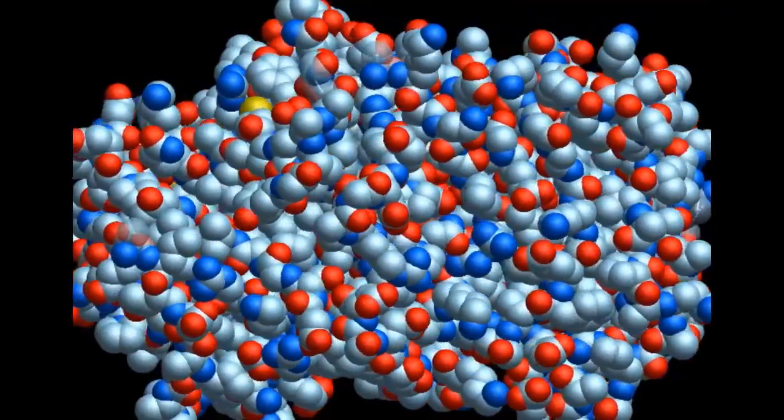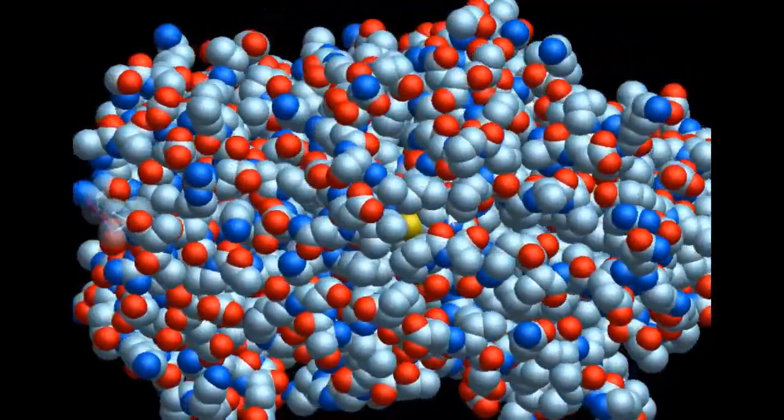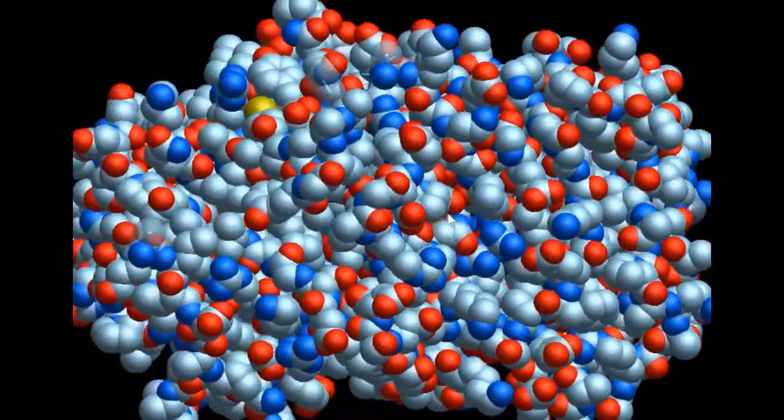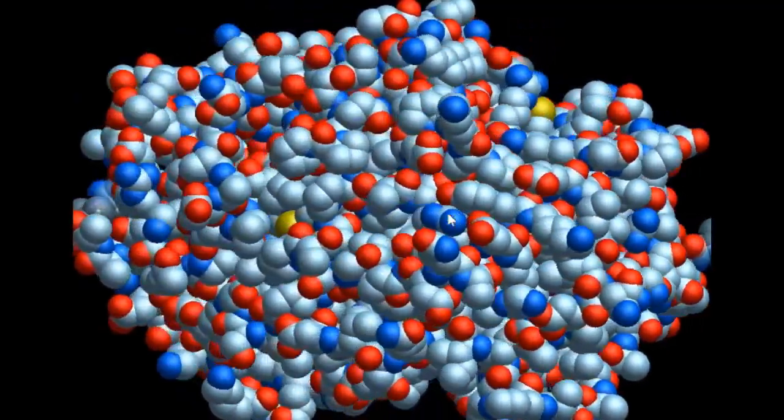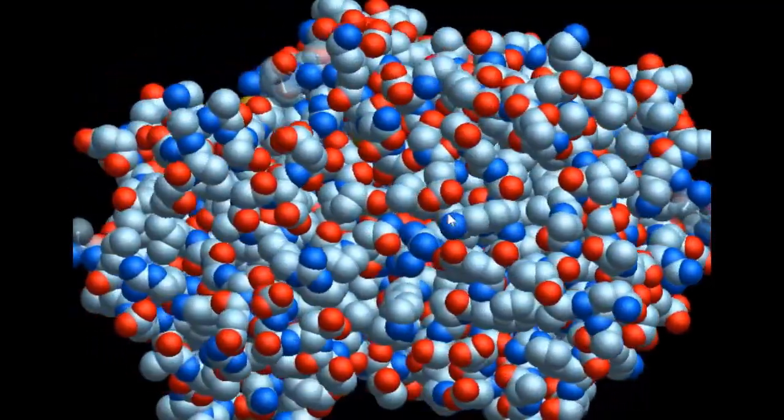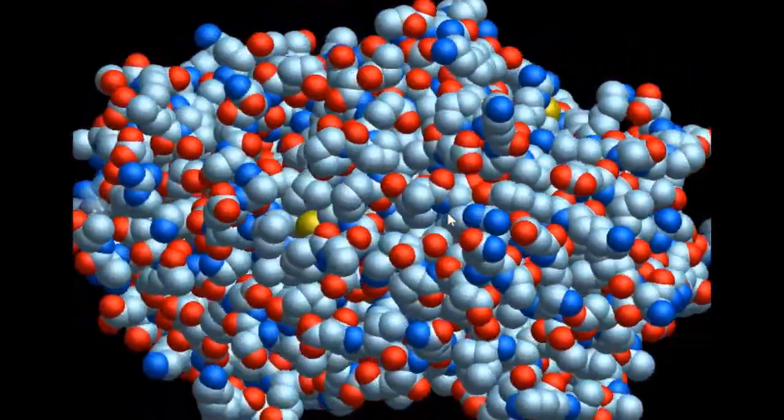All the carbons are displayed in cyan, all the oxygens in red, all the nitrogens in blue, and the yellow dots that you see once in a while are from sulfur. Like cysteine and methionine are amino acids with sulfur. Hydrogens are typically not displayed for protein X-ray structures.